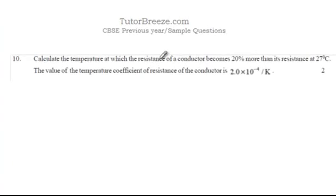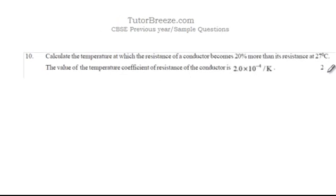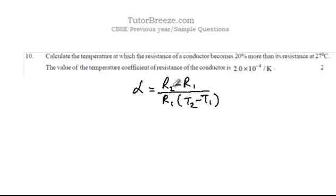You are given the value of the temperature coefficient of resistance and you have to calculate the temperature at which the resistance becomes 20% more than its resistance at 27 degrees Celsius. This is a 2 mark question. We will use a formula for the temperature coefficient of resistance which is alpha equals R2 minus R1 over R1 times T2 minus T1. This has the same form as the coefficient of linear expansion or surface expansion or volume expansion. It's final minus initial by initial divided by the change in temperature.